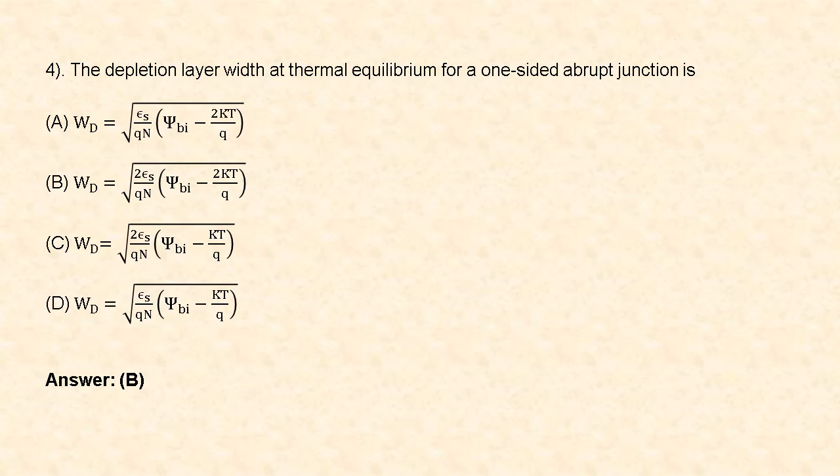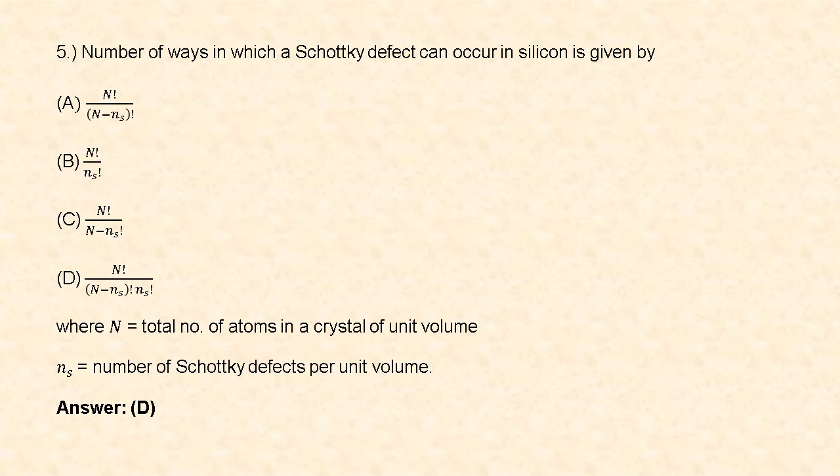Next question: the Schottky depletion layer width at thermal equilibrium for a one-sided abrupt junction is given by W_D = √(2ε_s / q · N · (V_bi − 2kT/q)). So option B is correct.